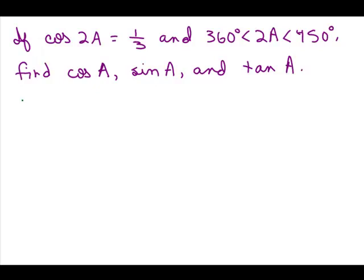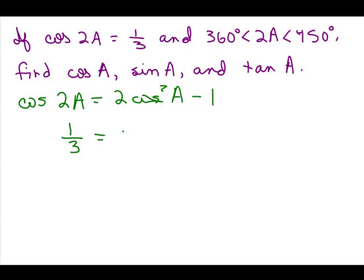The formula for the cosine of 2a — there are different ones, but one of them is 2 cosine squared a minus 1. So if we know the cosine of 2a is 1/3, we replace cosine of 2a with 1/3 and we have 1/3 equals 2 cosine squared a minus 1. We're trying to find the cosine of a, so if we can solve this equation for cosine of a, we'll be done.